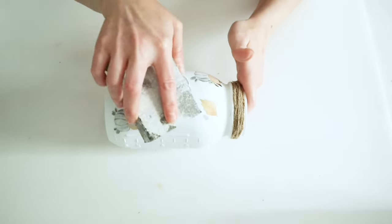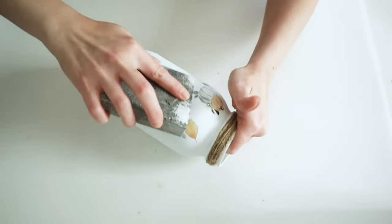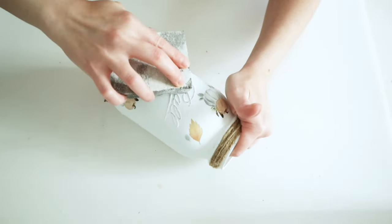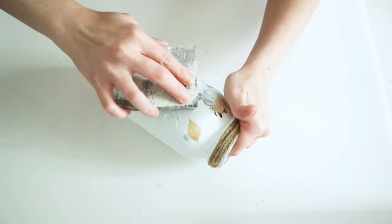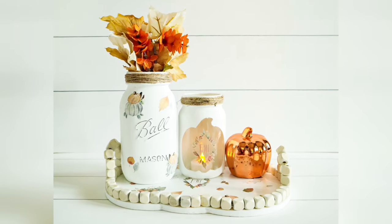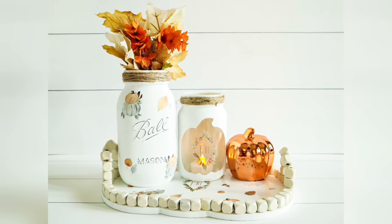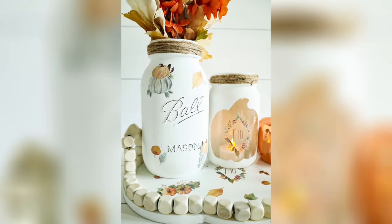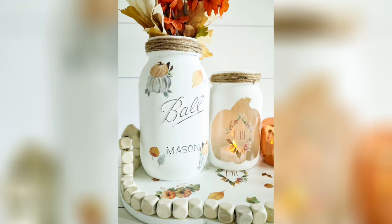And finally for this project, the last step was just kind of sanding down over where it says ball and mason on the larger mason jar. And here's how they turned out. This is how I've had this tray and these jars styled in my house for the past few weeks. And I think the combination is just absolutely gorgeous.